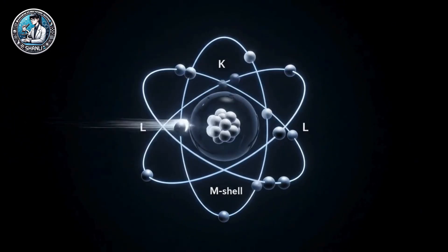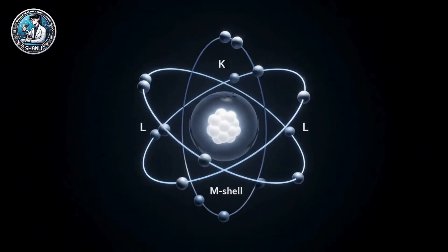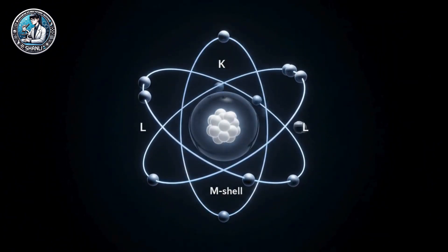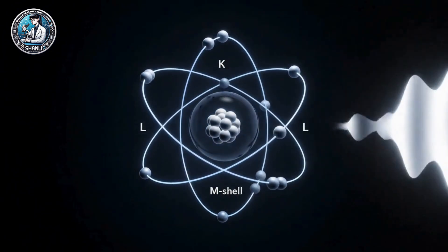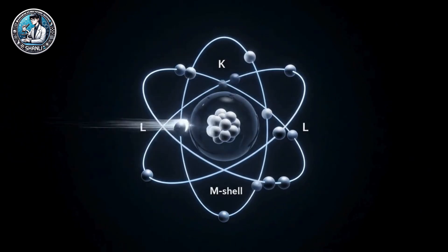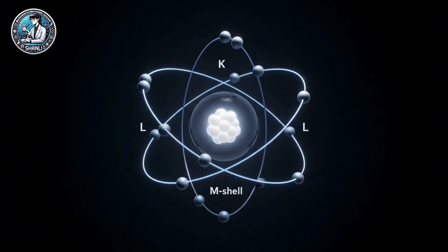When high energy particles, like X-ray photons, strike an atom, they can eject an electron, creating a vacancy, often in the K-shell, leaving the atom in an unstable state.